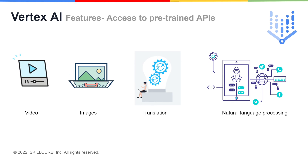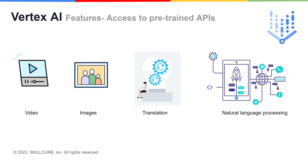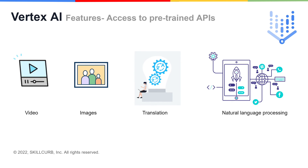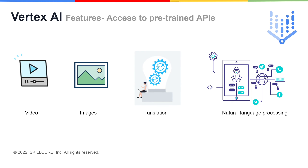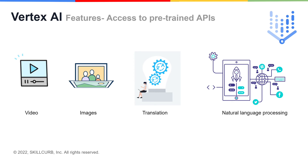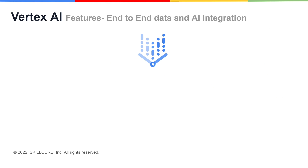Vertex AI makes it easy to integrate video translation and natural language processing with existing applications. AutoML empowers engineers to train models customized to meet their business needs with minimal expertise and effort.